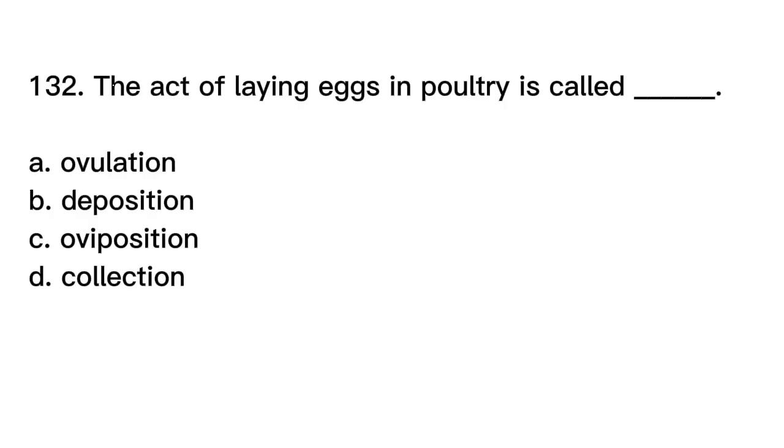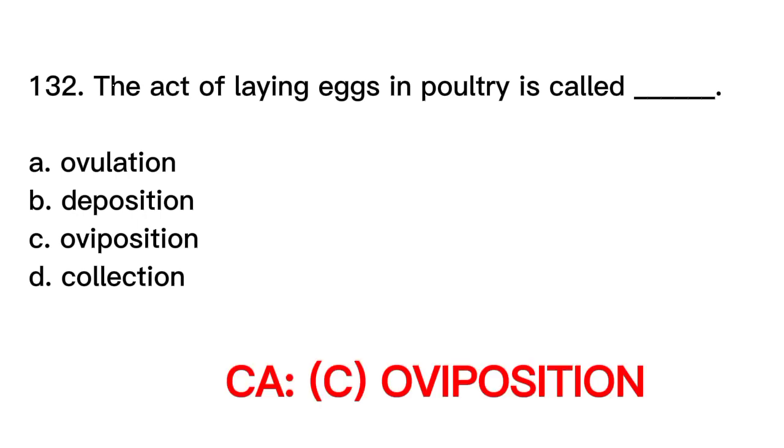Number 132. The act of laying eggs in poultry is called blank. A. Ovulation. B. Deposition. C. Oviposition. D. Collection. Correct answer is letter C. Oviposition.